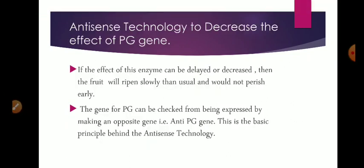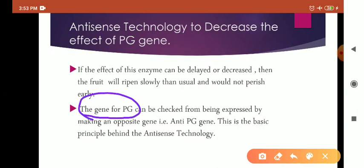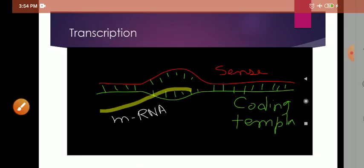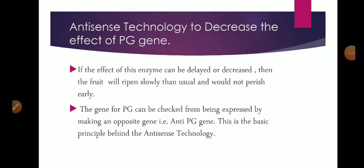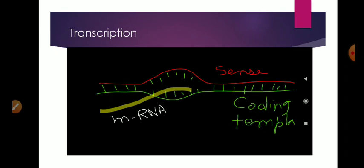Now what can be done for this? Antisense technology has been used in this Flavr Savr tomato. The PG gene which codes for polygalacturonase, they have prepared an anti-PG gene so that the expression of that gene can be controlled or can be minimized, so that there is a delay in tomato maturing. So here we have to understand that this antisense technology is working.